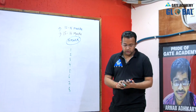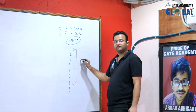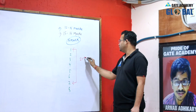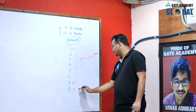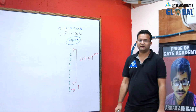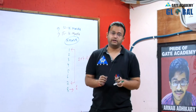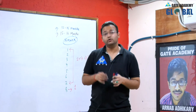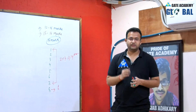The weightage of the first 7 chapters is 2 marks each, so 2 into 7 gives us 14 marks from those 7 chapters. From the last chapter, chapter number 8, we can expect 1 mark. So in total, 15 marks can be scored from geotechnical engineering alone, which is 15 percent of the total 100-mark GATE paper.